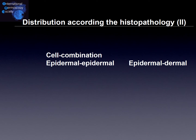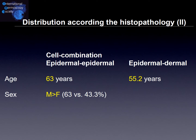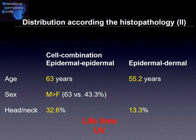We also looked at the cell combination — meaning epidermal-epidermal origin versus epidermal-dermal origin — and examined age. Epidermal-epidermal collision lesions were older, at 63 years, compared to 55 years for epidermal-dermal origin. There were also more males than females with epidermal-epidermal combination, and more located at the head and neck. What could be the cause? As we live longer and stay outside more, we accumulate higher UV radiation, which will be a very important conclusion for our daily work in practice or clinic.